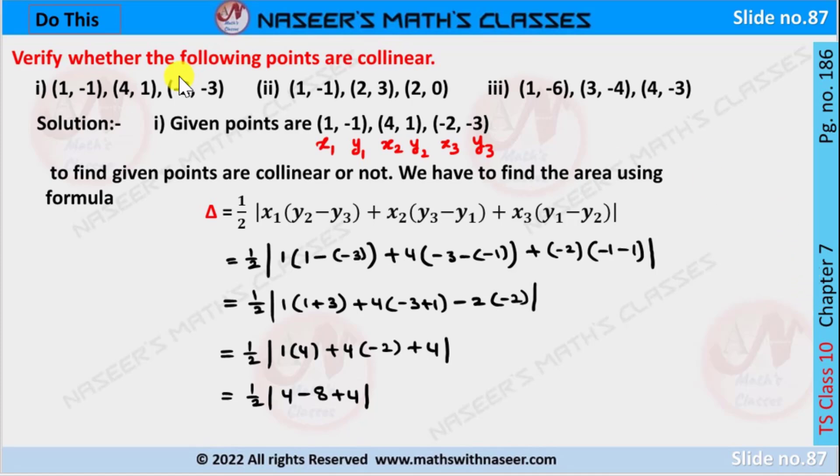Verify whether the following points are collinear or not. Three ordered pairs are given: (1, -1), (4, 1), and (-2, -3).